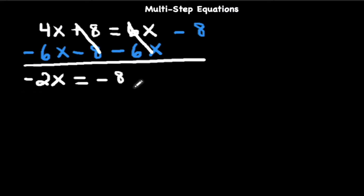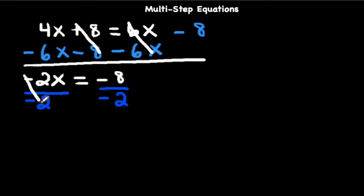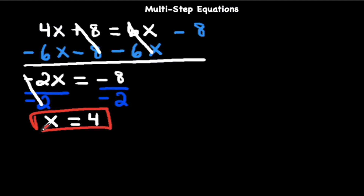So now we need to isolate x. Let's divide by negative 2 on both sides. Negative 2 divided by negative 2 is just 1, so we're left with 1x equals negative 8 divided by negative 2, which is positive 4. So x equals 4.